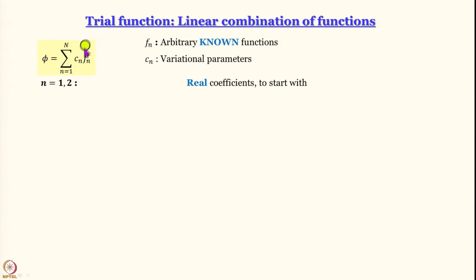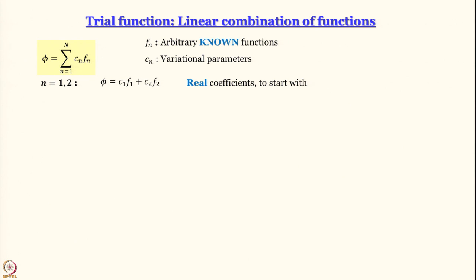To keep things simple we start with a two-component system where only two functions contribute to phi. For N equal to 2, phi equals C₁F₁ plus C₂F₂. F₁ and F₂ are basis functions I have chosen; phi is the wave function I am trying to synthesize.